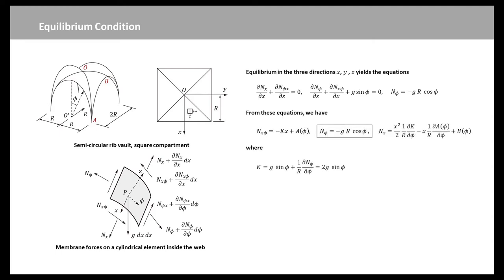From the equations of equilibrium, we have the expressions of Nx_phi, N_phi and Nx where k is expressed here. Because the profile is symmetric, the shear force Nx_phi cancels at x equals 0, so that A_phi equals 0. Take A_phi into account together with k equation. So, Nx_phi is negative 2 times g times x times sine phi.